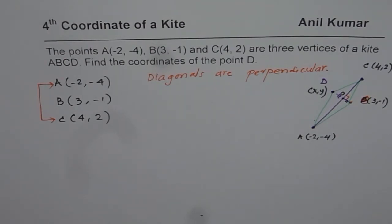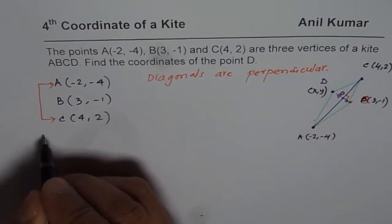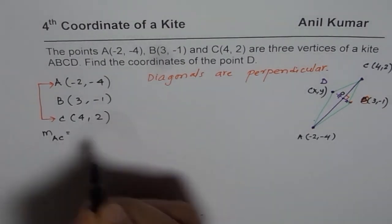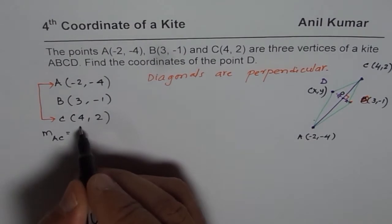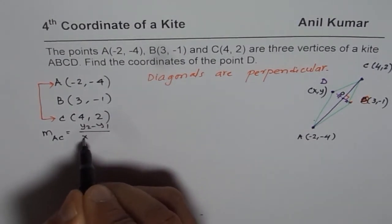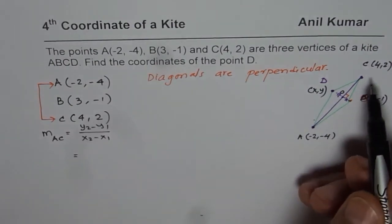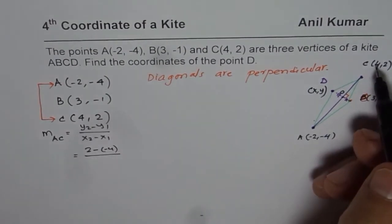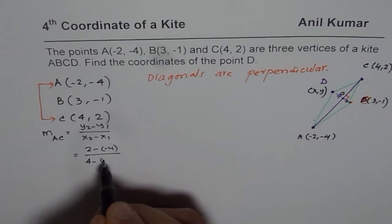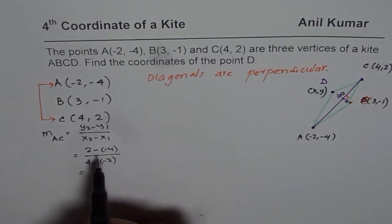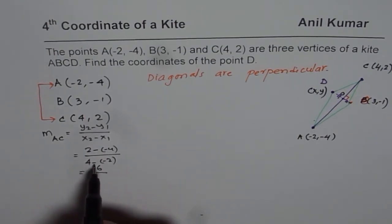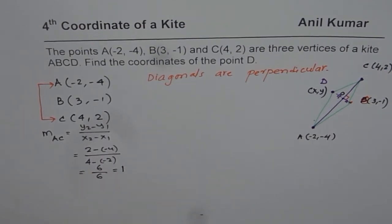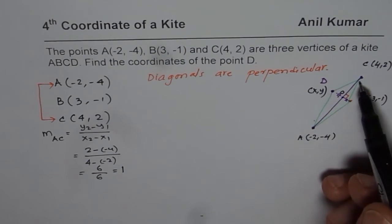Let's go through the steps of finding the coordinates of point D. We begin by finding the slope of line AC. The formula is (Y2 - Y1) / (X2 - X1). Y values are 2 and -4, so it's (2 - (-4)) / (4 - (-2)), which gives 6/6. The slope of AC is 1.